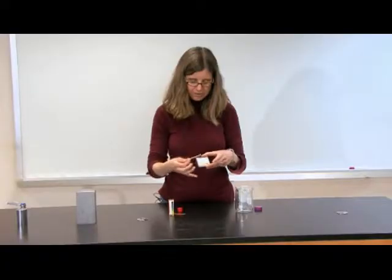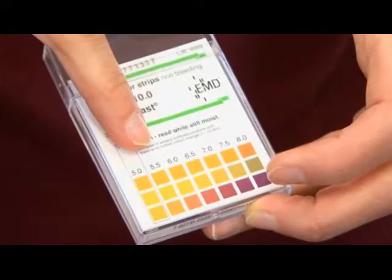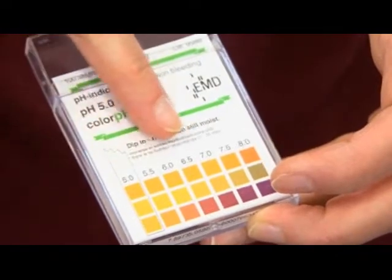But another nice feature about this pH paper is that you can read off in increments of 0.5, so 5.0, 5.5, 6.0, etc.